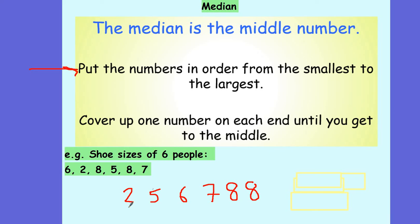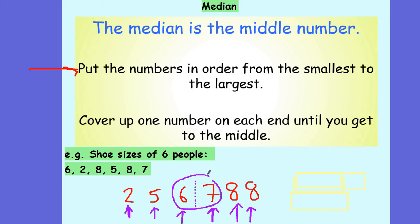I then go from one end to the other — 1 from this side, 1 from this side, 2 from this side, 2 from this side, 3 from this side, 3 from this side. So we know that the median is the middle number between these two numbers, 6 and 7. We add together 6 and 7, which gives me 13, then divide that by 2. 13 divided by 2 gives me 6.5.